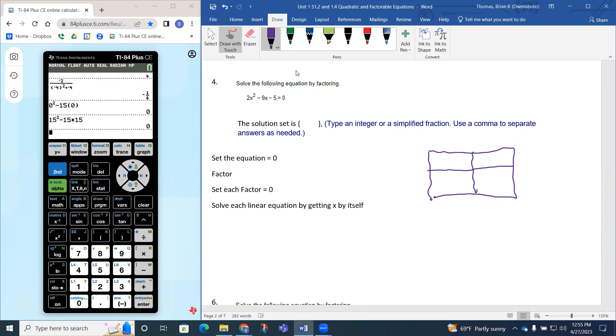The quadratic term 2x squared goes here, and the constant negative 5 goes there. The catch is when we make the box, you want to multiply the 2 times the negative 5, so 2 times negative 5 is negative 10.